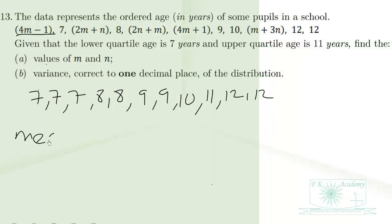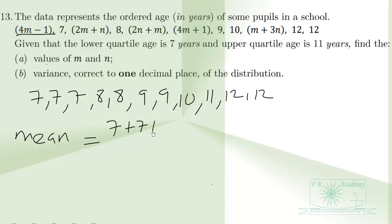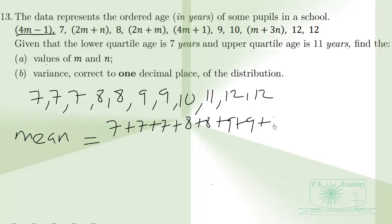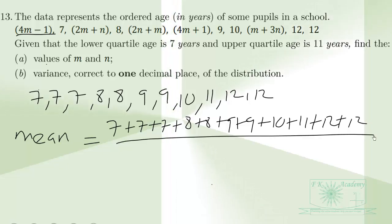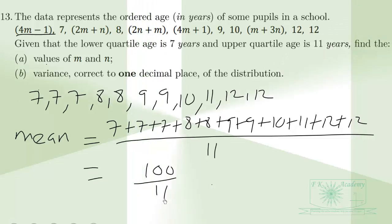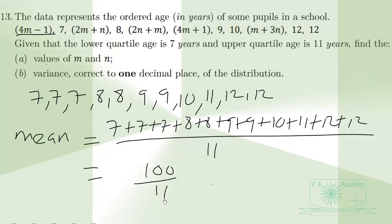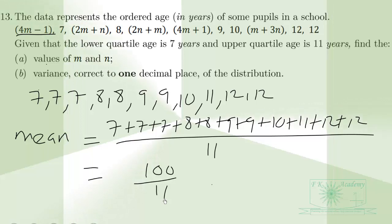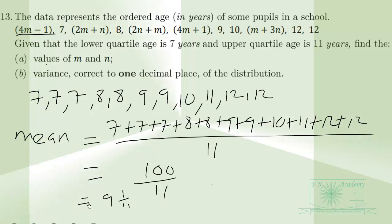The mean is the sum of all values divided by 11: (7 + 7 + 7 + 8 + 8 + 8 + 9 + 9 + 10 + 11 + 12 + 12) ÷ 11 = 100/11, which simplifies to 9 and 1/11. We leave the mean as 100/11 for the variance calculation.